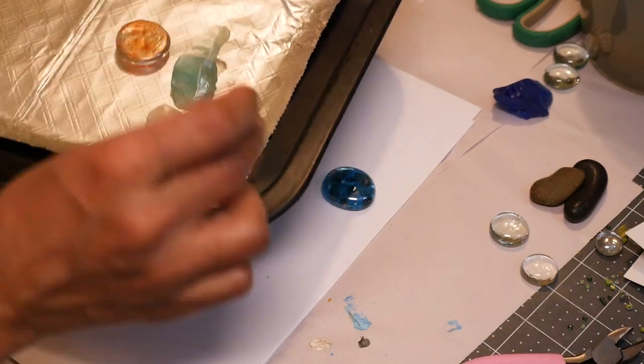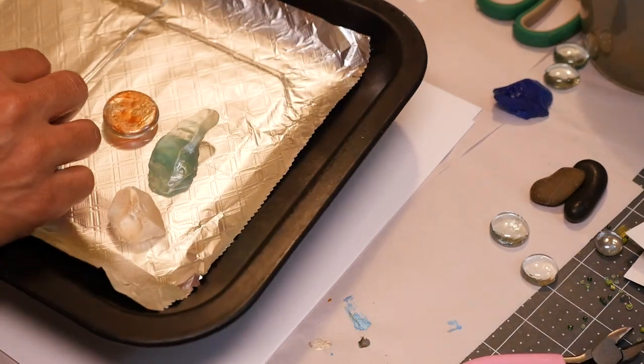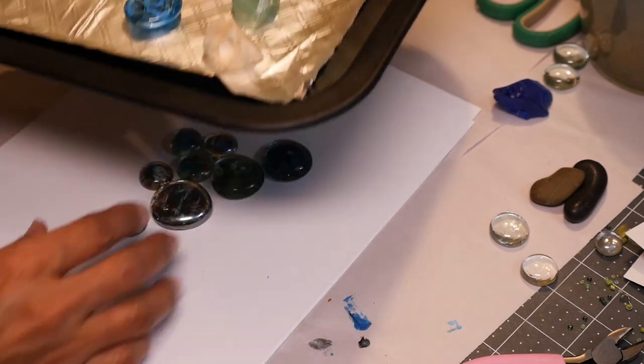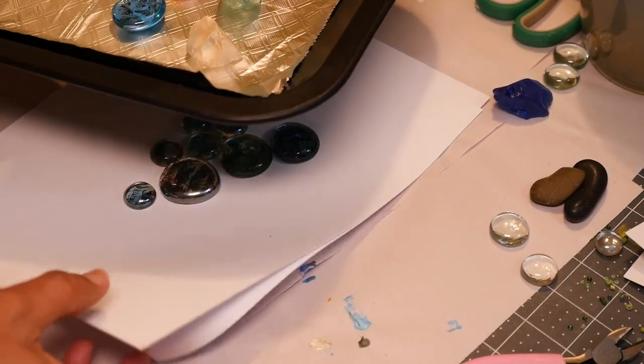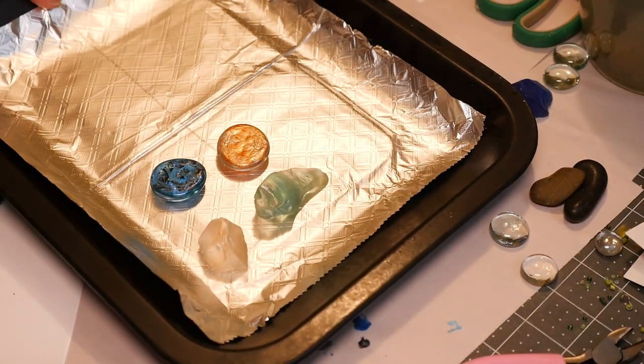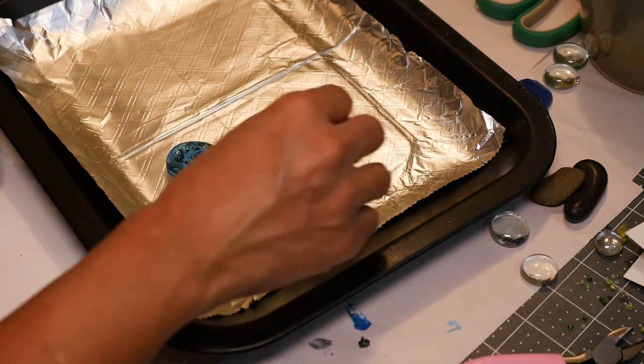So after the paint dries I'm going to stick this in the oven for 30 minutes at 350 to cure it. This will make it more permanent so that the paint won't scratch off.